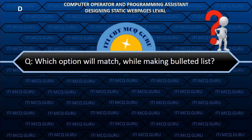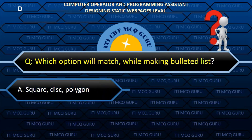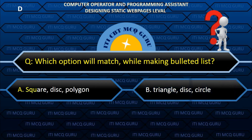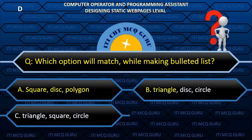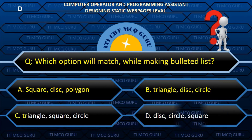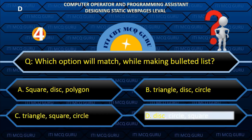Which option will match while making a bulleted list? D. Disc, circle, square.